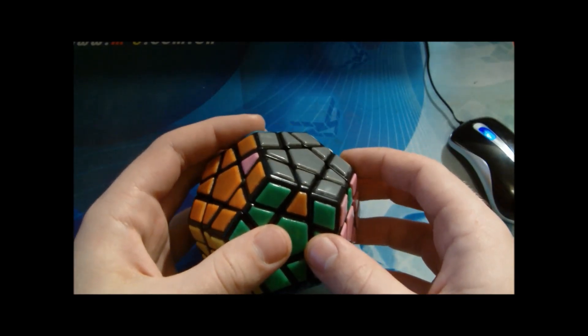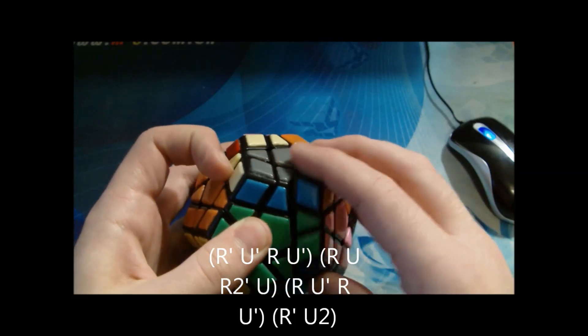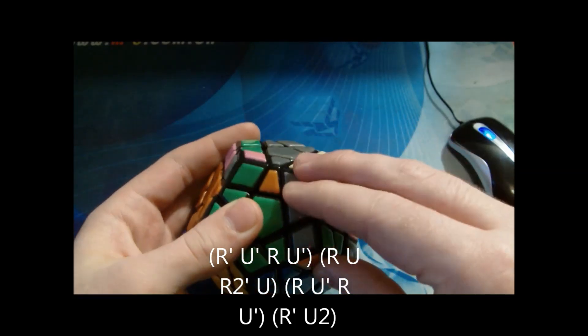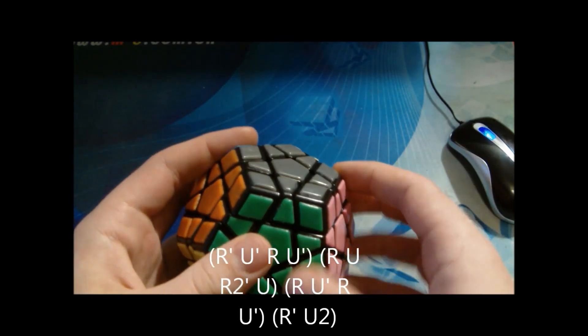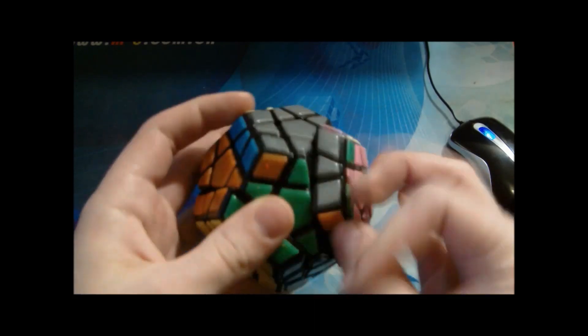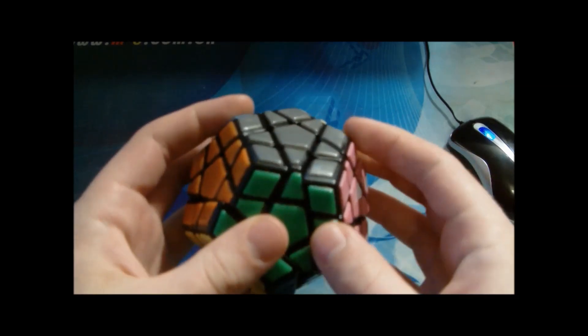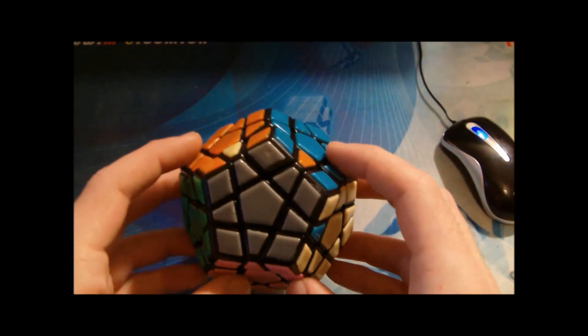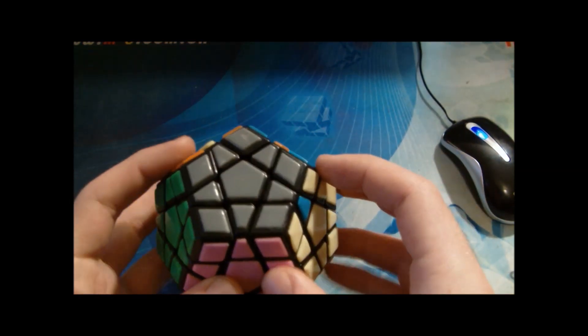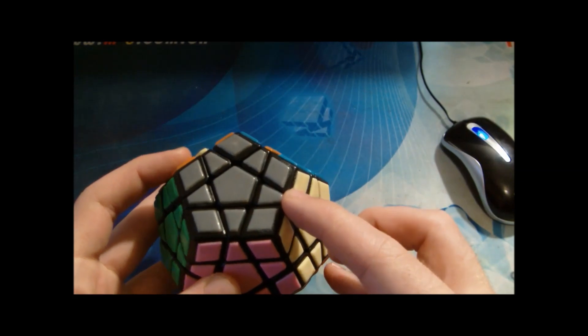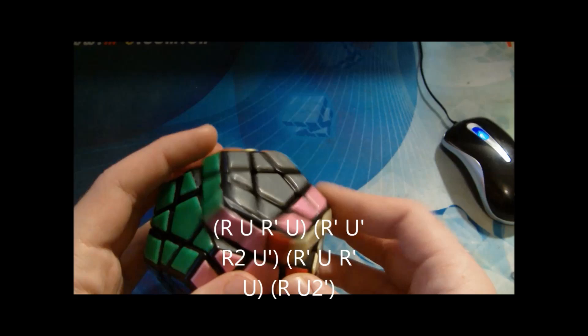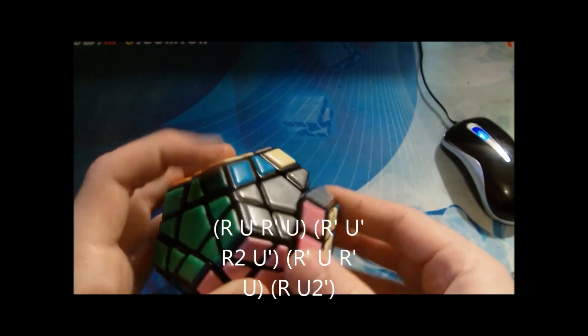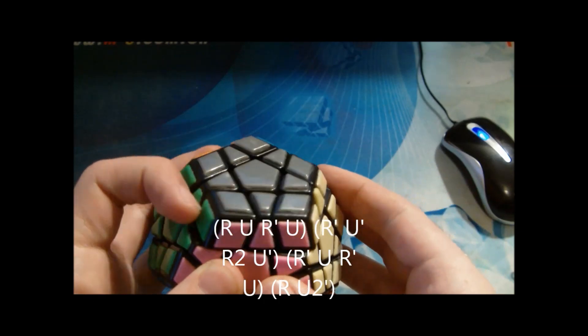I recognize this U perm from this angle and execute it from this angle. I see that this unsolved edge goes to this position, so I'll do this alg. It's really smooth and it's one of my favorite EPLL algs.